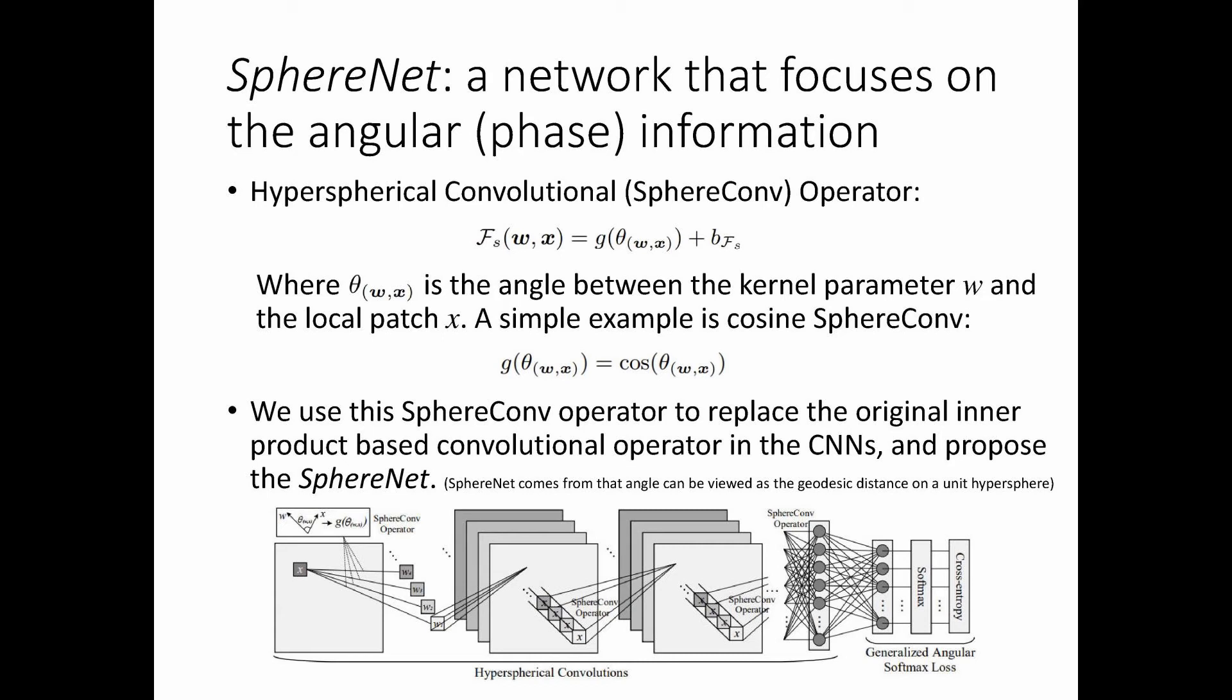SphereConv is a function of the angle between the kernel parameter w and the local patch x. A simple example is cosine SphereConv, which can be viewed as a normalized inner product. SphereNet uses SphereConv operators instead of inner product as similarity measure.